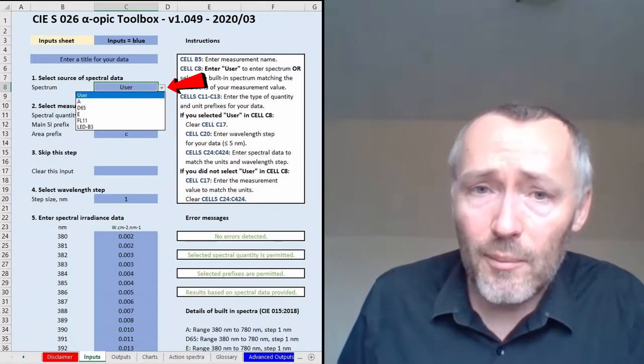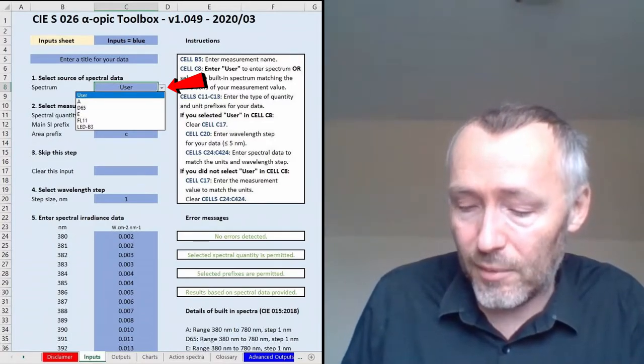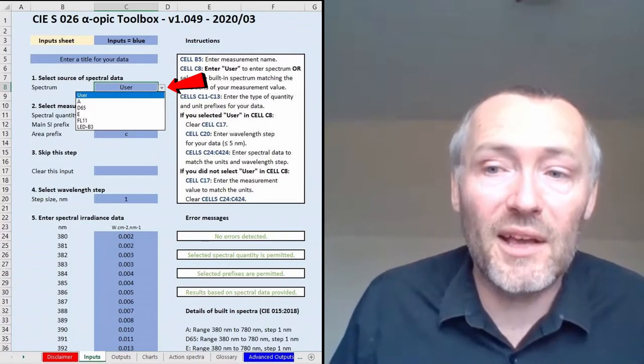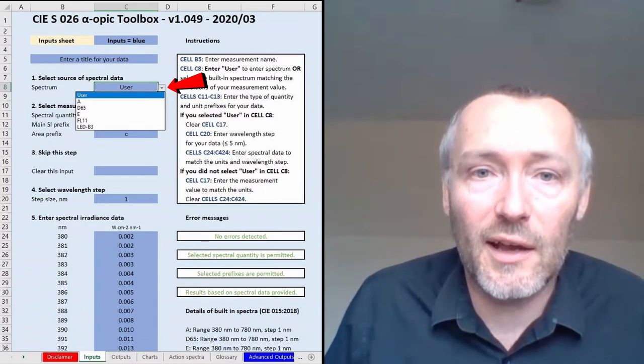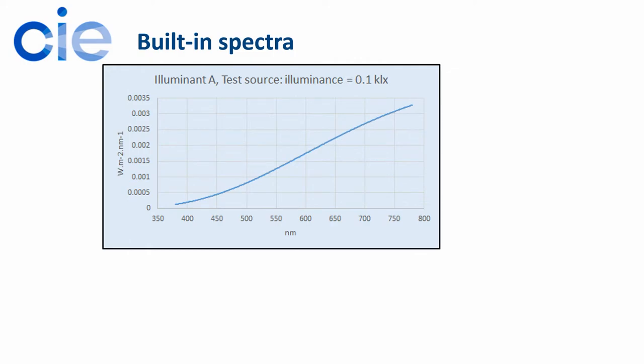And so I have some illustrations of the spectra that are available in these charts. We have first of all the reference spectrum that we're using to do the EDI calculations anyway, which is Daylight D65 and you can see the chart for that now. And we also have CIE Illuminant A, which is an incandescent or a tungsten halogen-like spectrum with a correlated color temperature of about 2800 Kelvin.